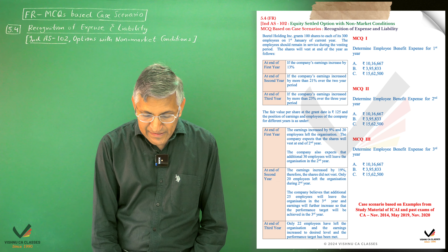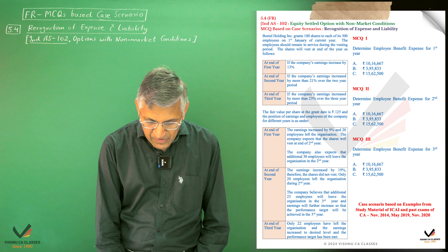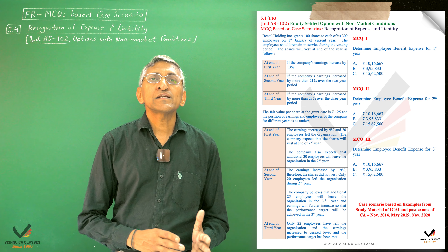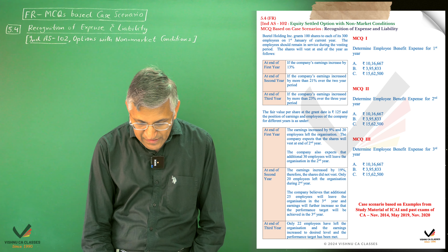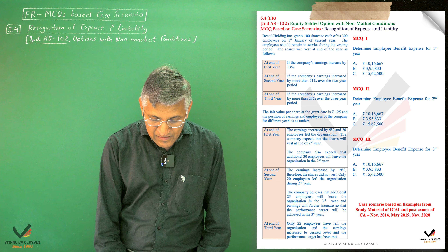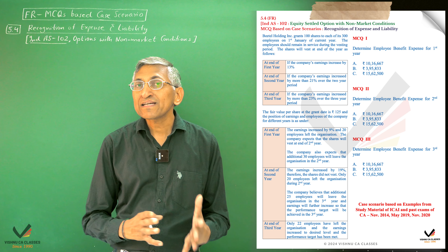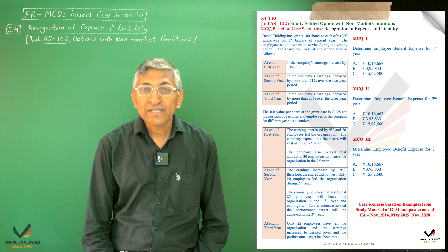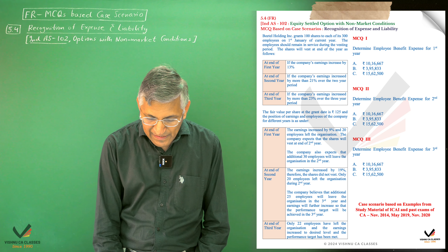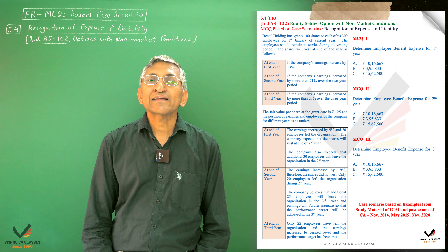In Year 1, earnings increase by 9% and 20 employees left the organization. The company expects that shares will vest at the end of Year 2. The company also expects that an additional 30 employees will leave the organization in Year 2, and that 250 employees will receive their shares at the end of Year 2.